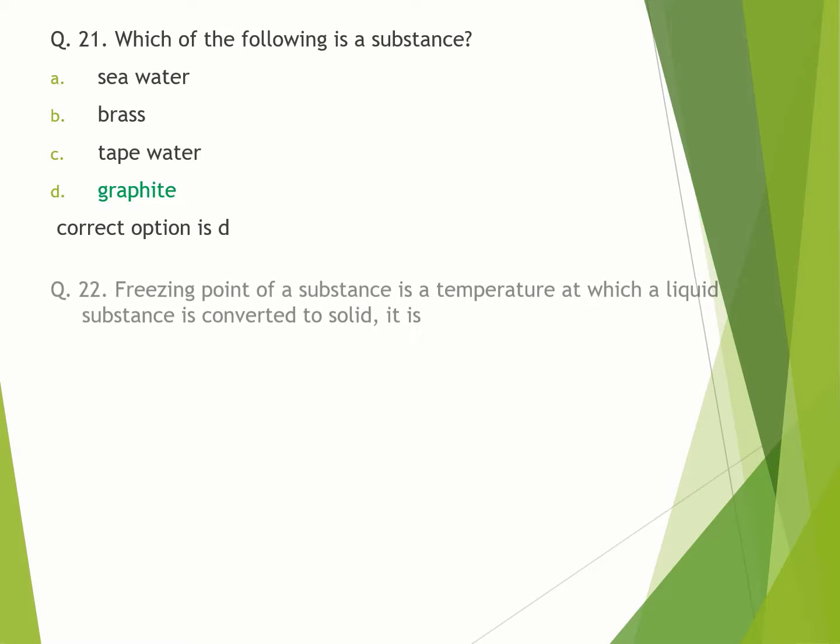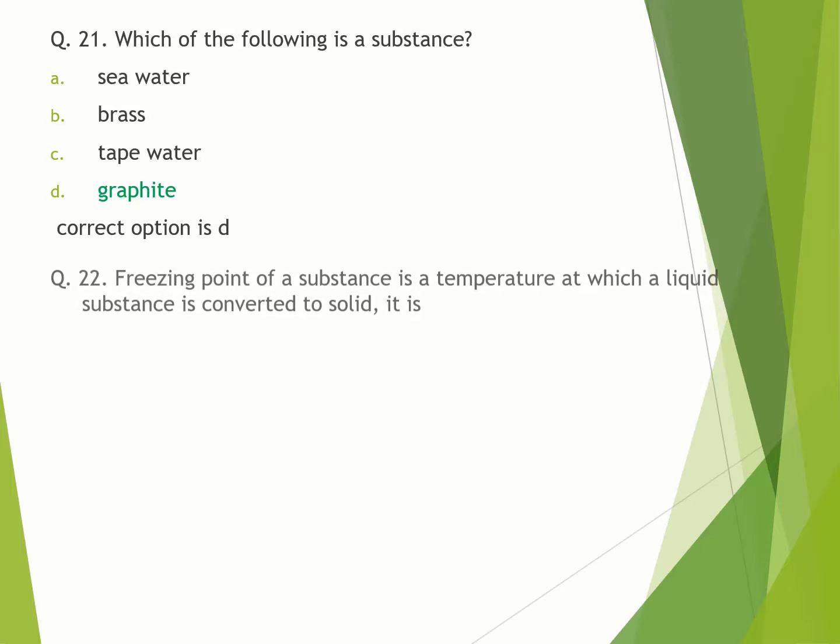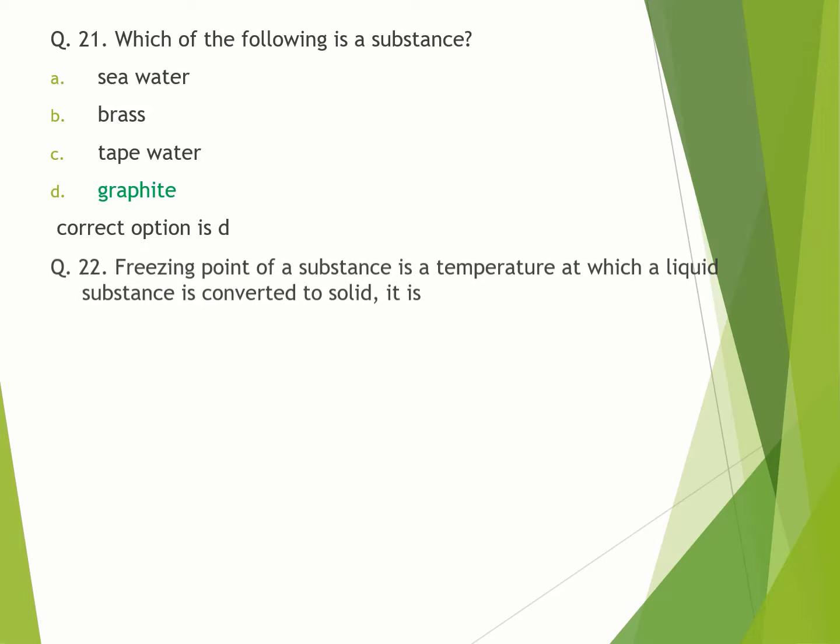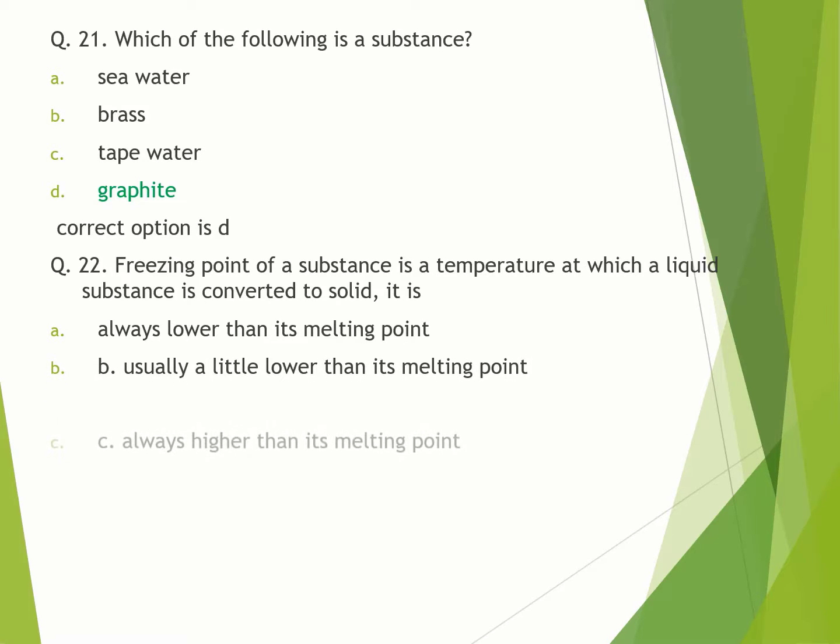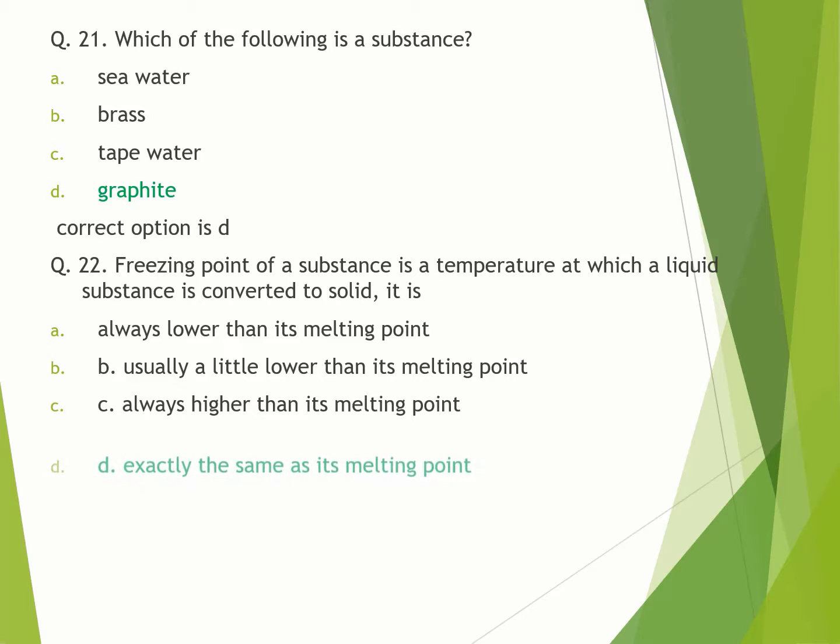Question number 22. Freezing point of a substance is a temperature at which a liquid substance is converted to solid. It is: A. always lower than its melting point. B. usually a little lower than its melting point. C. always higher than its melting point. D. exactly the same as its melting point. Correct option is D.